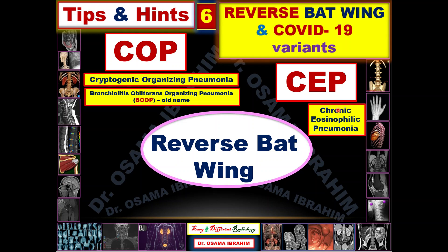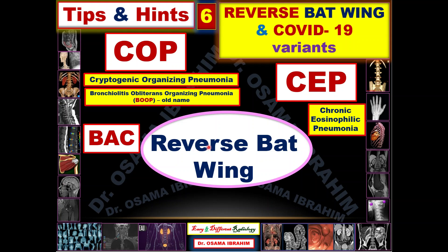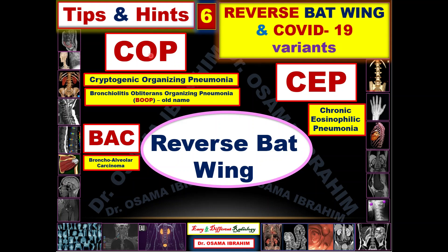Chronic eosinophilic pneumonia can be considered when you have supporting historical data, such as the presence of peripheral eosinophilia or an asthmatic patient. So COP and CEP are the two main differential diagnoses for the reverse batwing pattern. There are about four other causes that can also produce reverse batwing abnormality in the chest, but these causes need a specific history to diagnose them. The first less-likely diagnosis — compared to the strong diagnoses of COP and CEP — is BAC, meaning bronchoalveolar cell carcinoma.